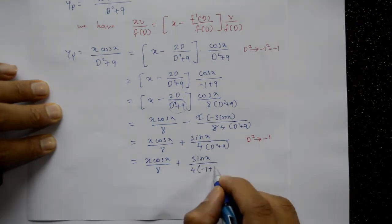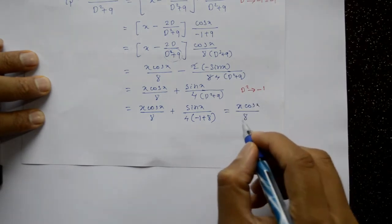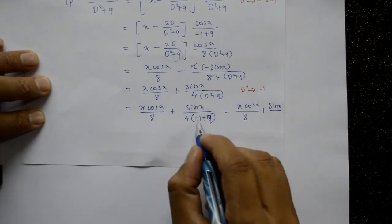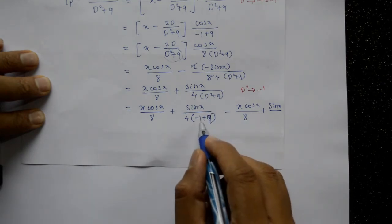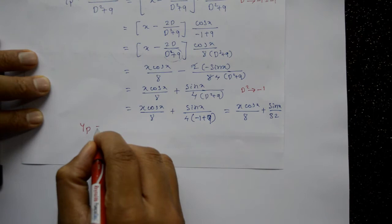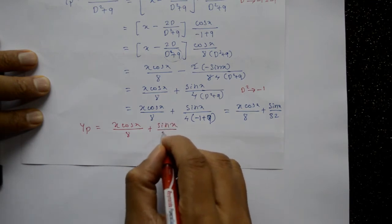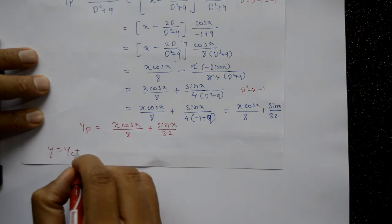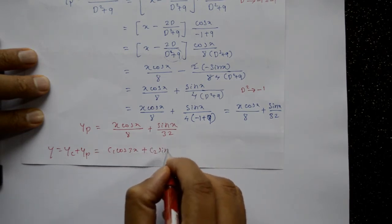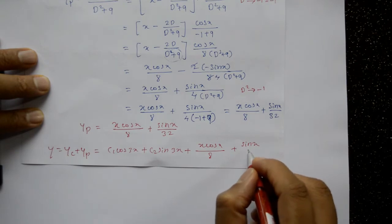Therefore, the particular integral is yp = x·cos(x)/8 + sin(x)/32. The complete solution is y = yc + yp = c₁·cos(3x) + c₂·sin(3x) + x·cos(x)/8 + sin(x)/32.